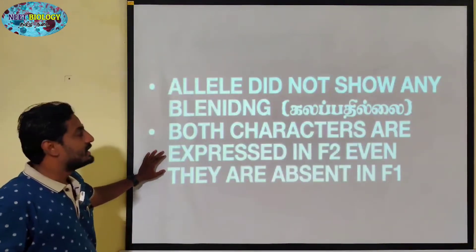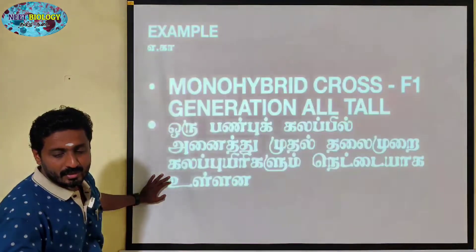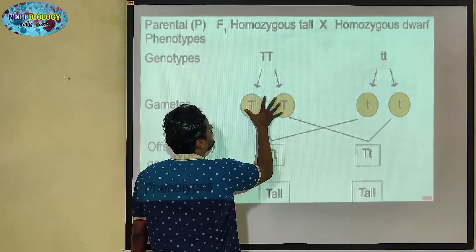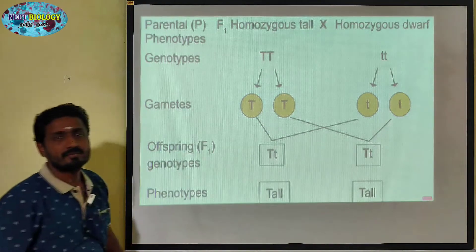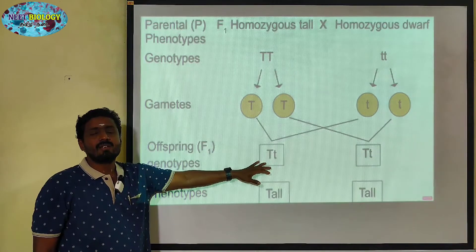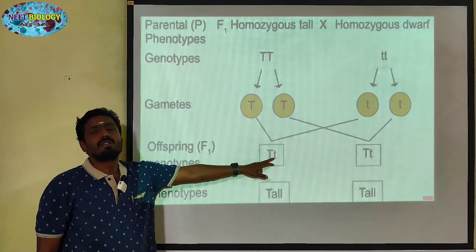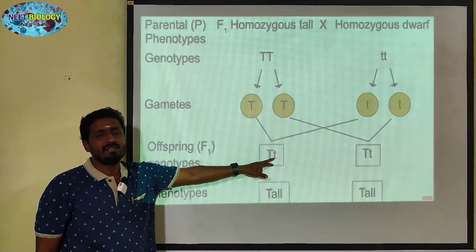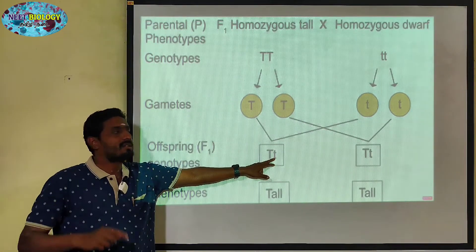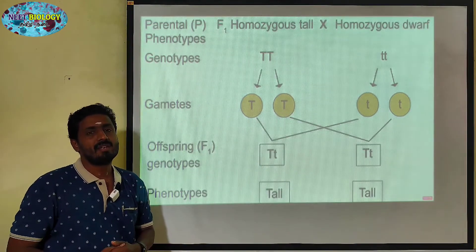Both characters are expressed in F2, even though the recessive character is absent in F1. In the monohybrid cross, the first generation shows only the dominant character expressed, while the recessive allele is not expressed. F2 is produced by self-pollination.